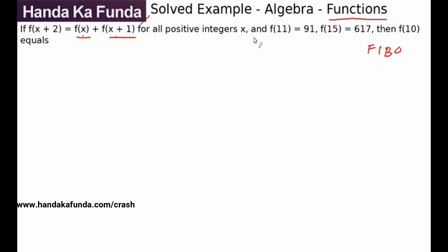So for all positive integers of x, f11 is given to me as 91, f15 is given to me as 617, and I have to find out the value of f10. So suppose I take f10 as a, f11 is given to me as 91.